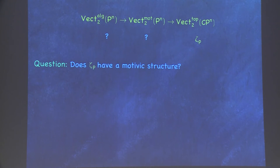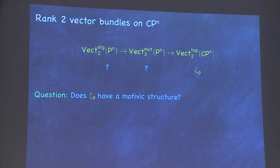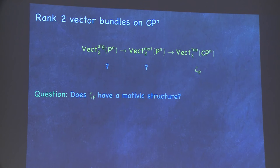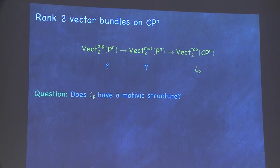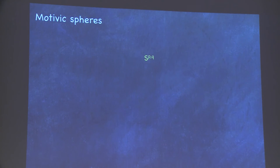That's predicted to have no algebraic structure. So now I want to go back to this way I was setting this up and ask: do these bundles have motivic structures? And if they do, can we get those to have algebraic structures? In order to do that, we need to study the same kind of obstruction theory in the motivic homotopy category.